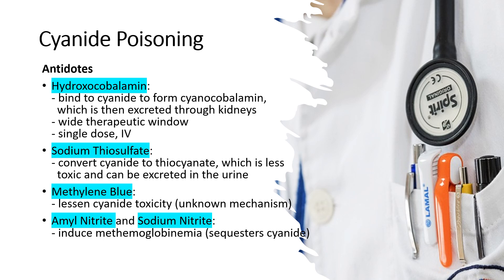Amyl nitrite and sodium nitrite are inhalation and intravenous agents, respectively, that can be used in specific situations where hydroxycobalamin or sodium thiosulfate are not immediately available. These agents work by inducing methemoglobinemia, which sequesters cyanide and reduces its toxicity. However, their use is less common and may be associated with potential side effects and complications.